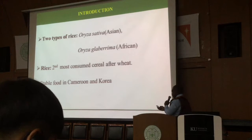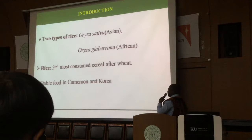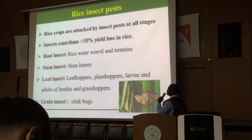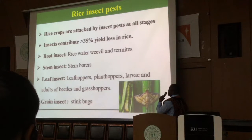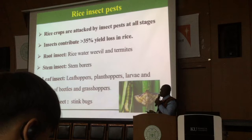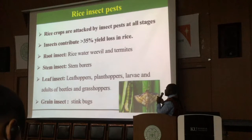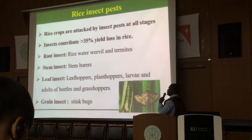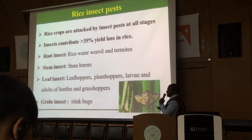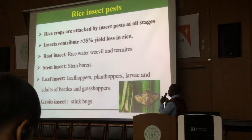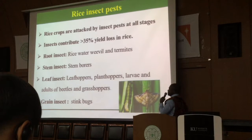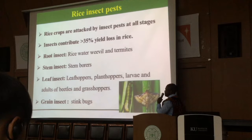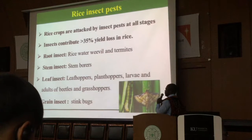The rice field is highly attacked by rice insects that generally cause more than 35 percent yield losses. These insects include the rice water weevil and termites, which are predominant root insects, and the stem borers that attack the stems. Meanwhile, we have the leaf hoppers,